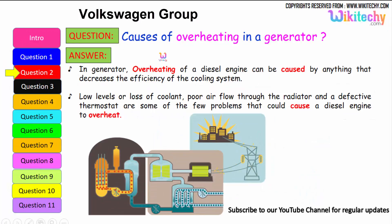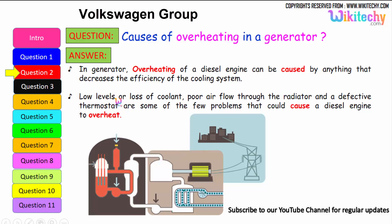Let us move on to the next question: causes of overheating in a generator. In a generator, overheating of a diesel engine can be caused by anything that decreases the efficiency of the cooling system. It can be due to the loss of coolant or low levels of the coolant, poor air flow through the radiators, and a defective thermostat, which are some of the few problems that could cause a diesel engine or a generator to overheat.